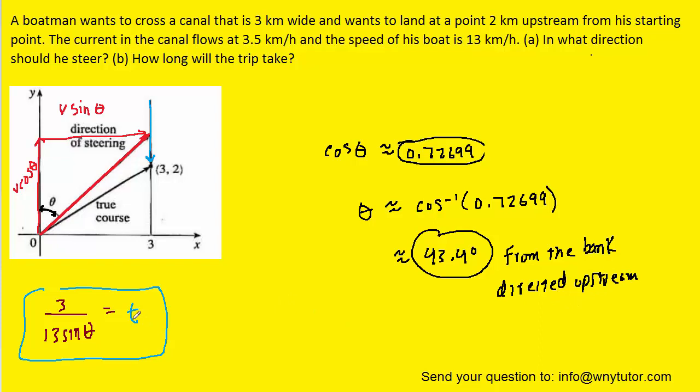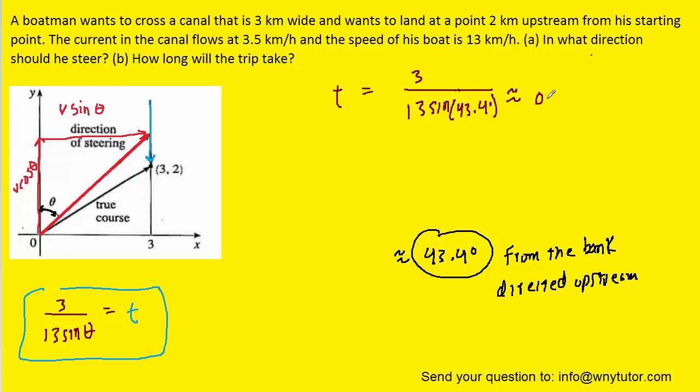For part b, we need to simply calculate the time required. Fortunately, we've saved this equation over here, so we're just going to plug in the 43.4 degrees in for theta to get the time. And so when we plug that in, we're going to get 0.336, and that will be measured in a unit of time of hours. And then, of course, if you need to convert that into minutes, you can multiply by 60, and you would get about 20.2 minutes. And so here is the correct answer for part b.